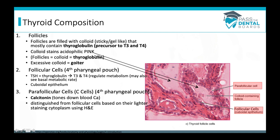Less frequently seen are the parafollicular cells, also known as C cells. They're called C cells because they produce a hormone starting with C: calcitonin. Calcitonin tones down blood calcium — the name tells you what it does: 'cal-tone-it-down.' Parafollicular cells are distinguished from follicular cells by their lighter staining.